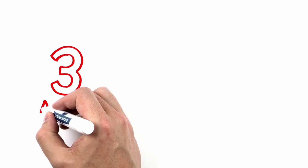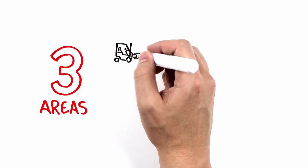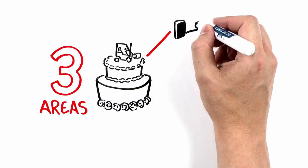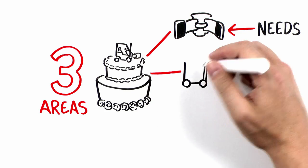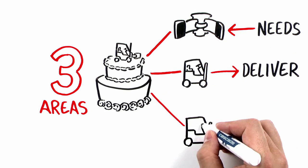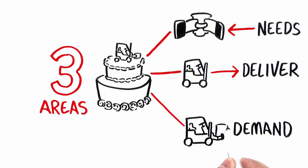There are really three areas that need to be considered for a quality forklift and attachment marriage. One, the attachment's hydraulic needs. Two, what the forklift can deliver. And lastly, three, the demand of the customer's application on the attachment.